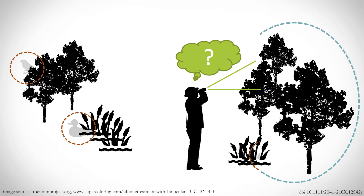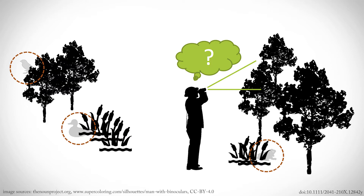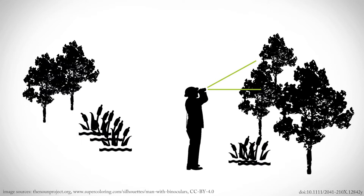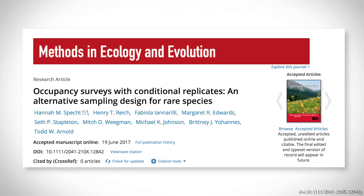The method's strength is that it accounts for the fact that we might fail to detect our study species, even if it's present at the study site. However, occupancy estimates for rare species tend to be biased because we're unlikely to observe the animals at all, and as a result, the data aren't very informative. So we've developed a new conditional occupancy survey design to improve occupancy estimates for rare species.